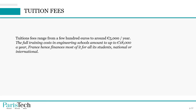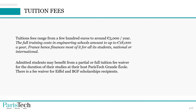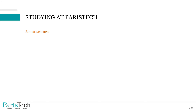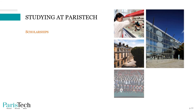Before applying, some of you might be concerned about tuition fees. The tuition fees range from a few hundred euros to around 5,000 euros per year. You should know that the full training cost in engineering schools can amount to up to 18,000 euros per year, which means France finances most of it for all students, national and international alike. Admitted students may also benefit from a partial or full tuition fee waiver for the duration of their studies, and there is a fee waiver for Eiffel and PGF scholarship recipients. Detailed tuition fee information is available on studywithus.paristech.fr.